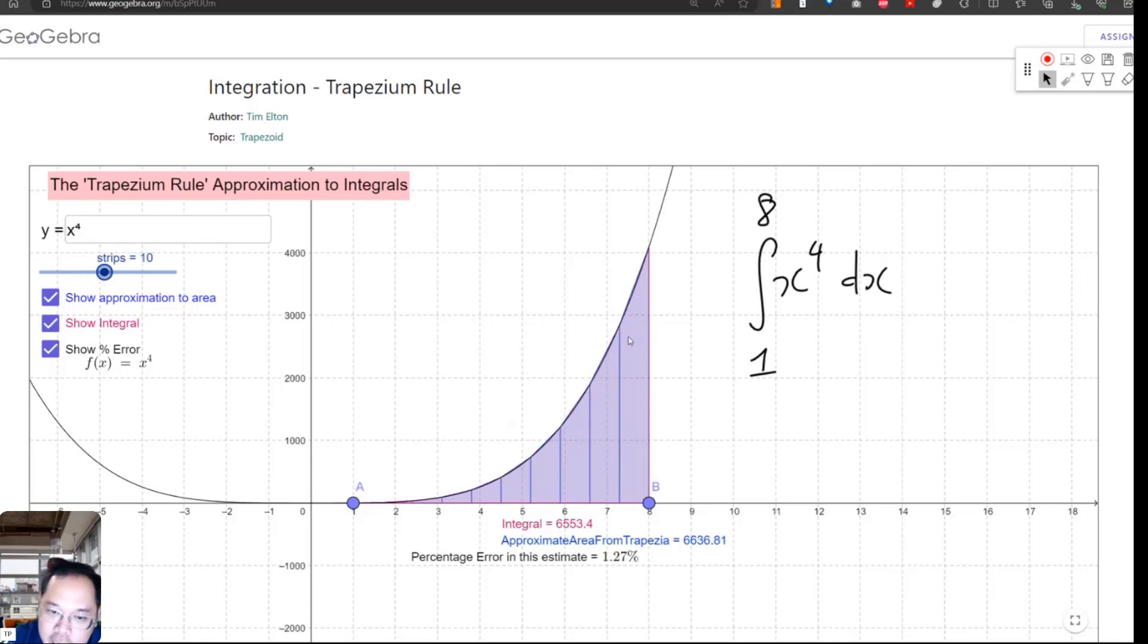[Vietnamese] For example, here I divide into 10 pieces. You see the trapezoids, right? The trapezoid shape. Then we will calculate more accurately, meaning estimate, estimation, the estimation will be closer to the actual value.